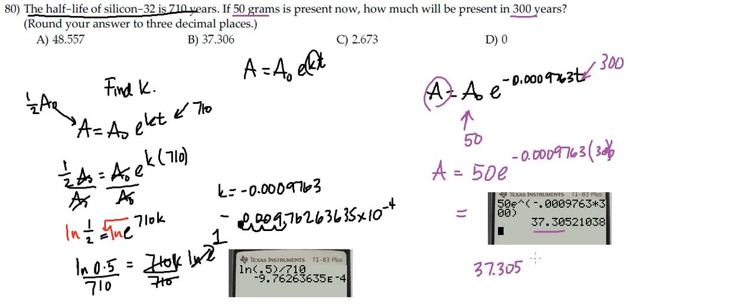Alright, and so at this point, you want to pick the answer that's closest. And so that would be 37.306. And again, it's probably due to rounding error. Either we didn't round well enough or maybe the solution algorithm for this homework set did not round as much as we did. So that's why we get a little bit of discrepancy between our answers.